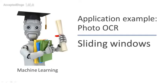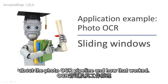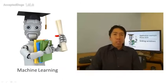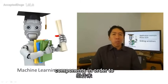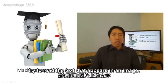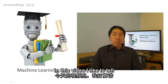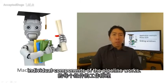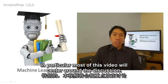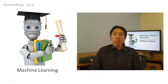In the previous video, we talked about the photo OCR pipeline and how that works, in which we would take an image and pass it through a sequence of machine learning components in order to try to read the text that appears in an image. In this video, I'd like to tell you more about how the individual components of the photo OCR pipeline work. In particular, most of this video will center around a discussion of what's called a sliding windows classifier.